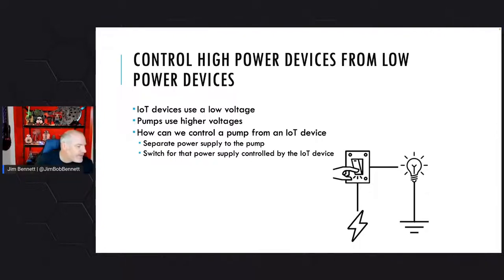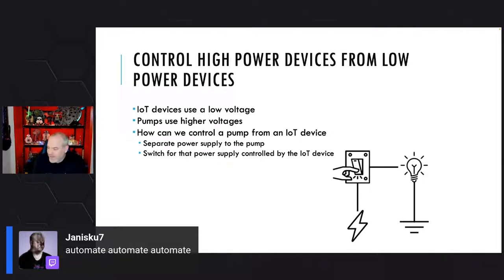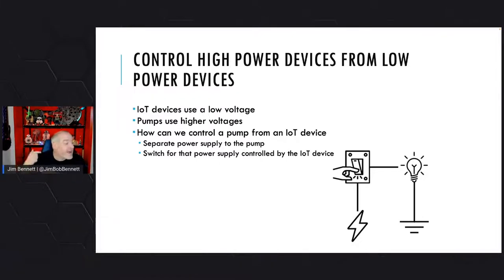Janescu7 says, 'automate, automate, automate' — yes, automate all the things. We love automation. We want to automate our plant watering — we want to have that feedback cycle so we don't have to think about it. We could control a switch that uses just a little bit of energy, which then connects a high-powered circuit to power our pump. That's how we can use an IoT device to control a high-powered device.